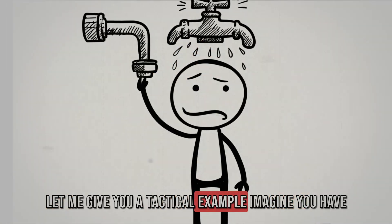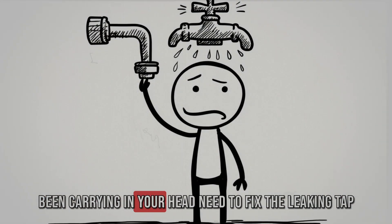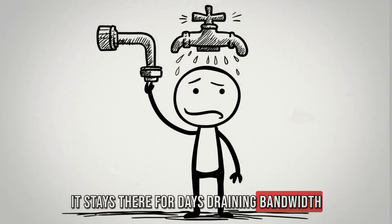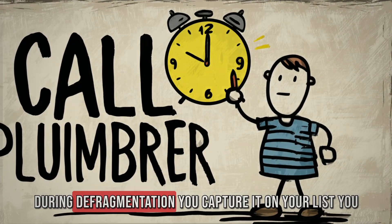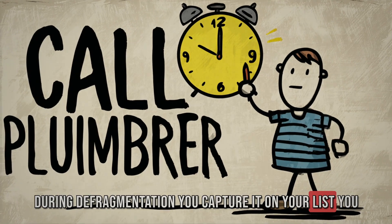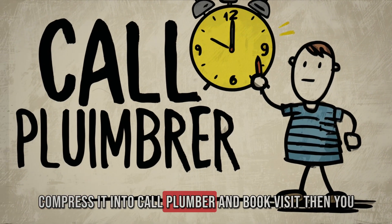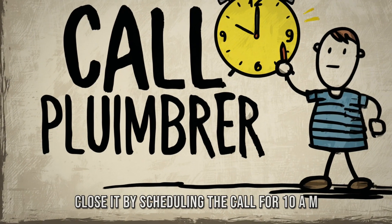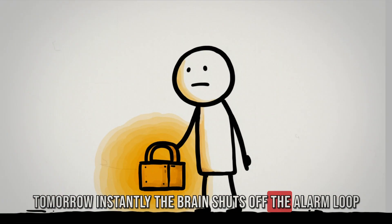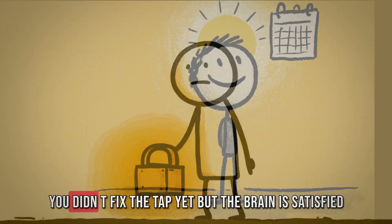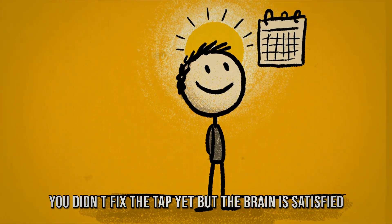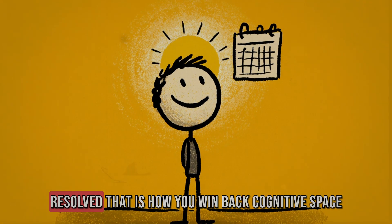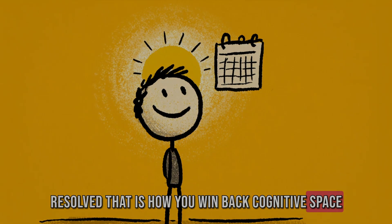Let me give you a tactical example. Imagine you have been carrying in your head, need to fix the leaking tap. It stays there for days, draining bandwidth. During defragmentation, you capture it on your list. You compress it into call plumber and book visit. Then you close it by scheduling the call for 10 a.m. tomorrow. Instantly, the brain shuts off the alarm. Loop closed. You didn't fix the tap yet, but the brain is satisfied because it knows exactly when and how it will be resolved. That is how you win back cognitive space.